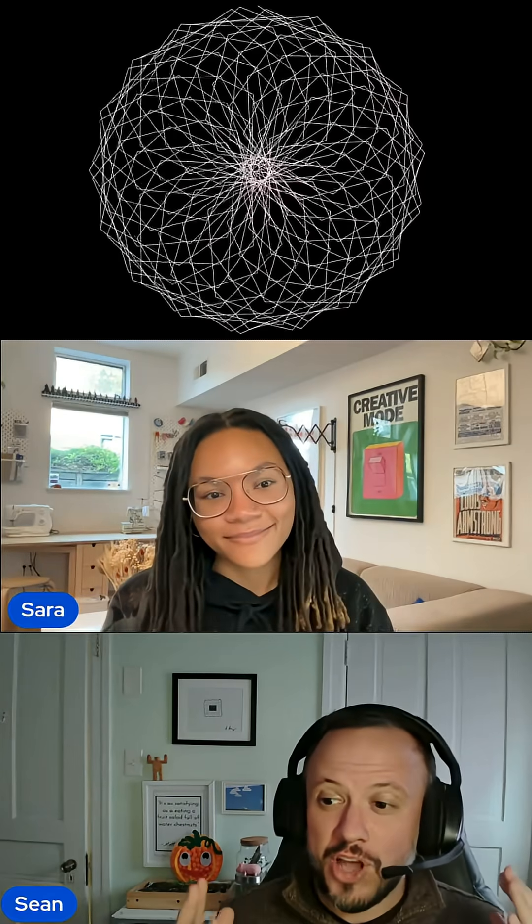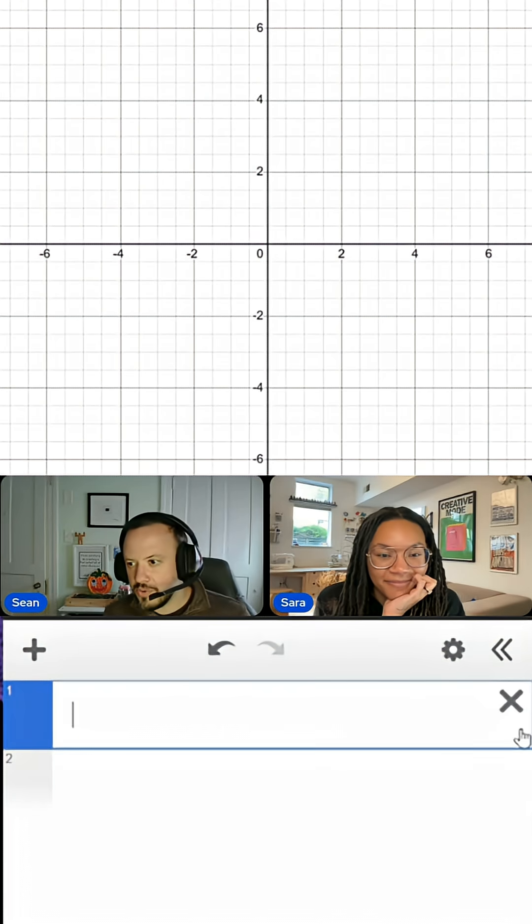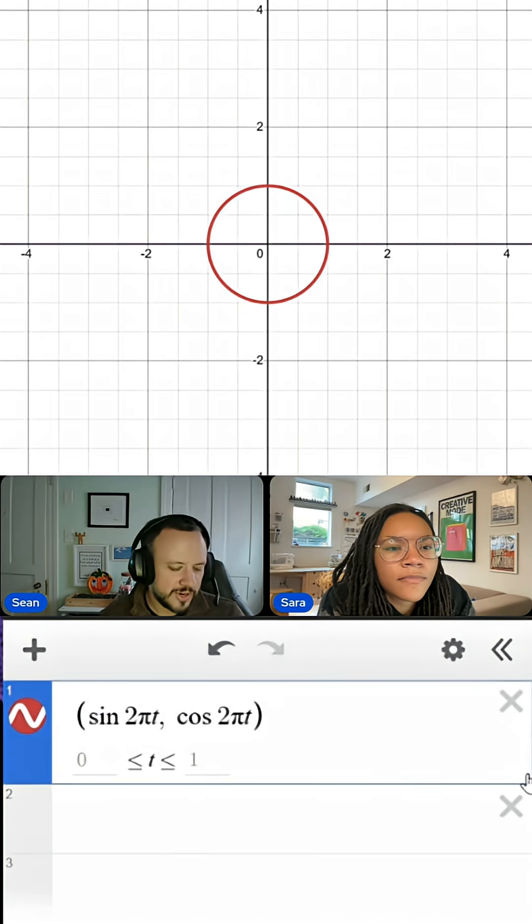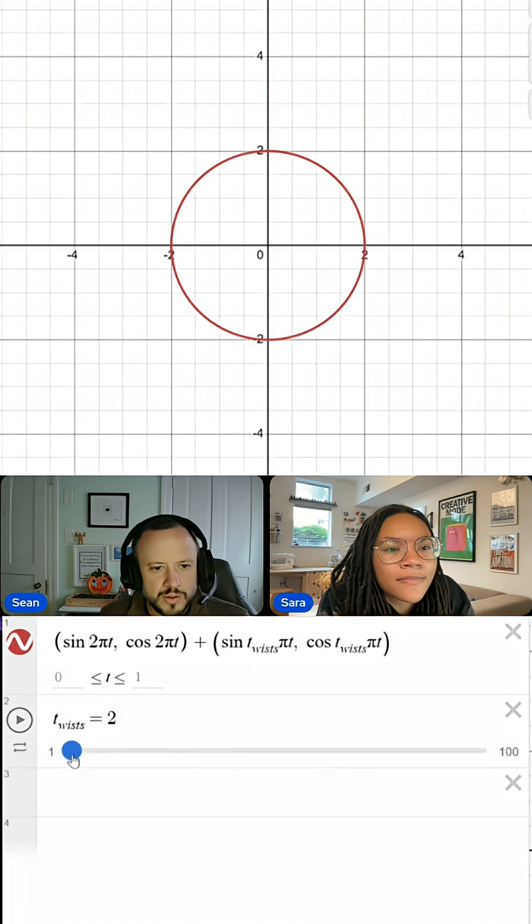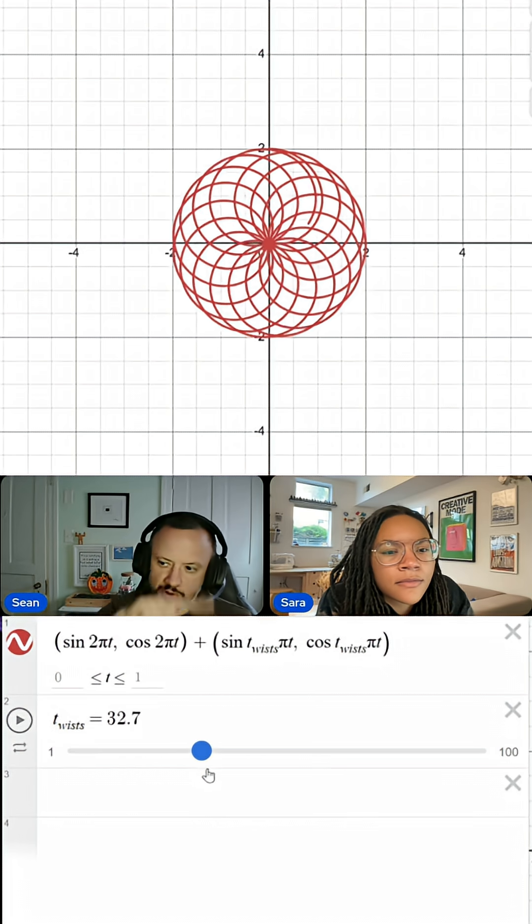Hey everyone, I'm Sarah. And I'm Sean. Sarah and I make art using math. The first thing we need here is a circle. And so that just makes a bigger circle. What we want to do with this is actually kind of twist this second circle up more while this first circle is going around.